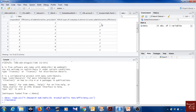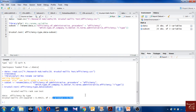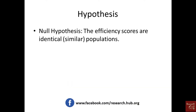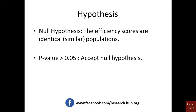I got a p-value of 0.78, which is well above 0.05, so we accept the null hypothesis. The null hypothesis was that the efficiency scores come from identical populations — meaning they are similar across all three conditions.